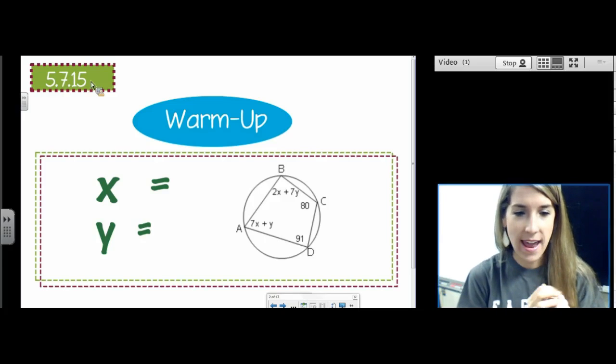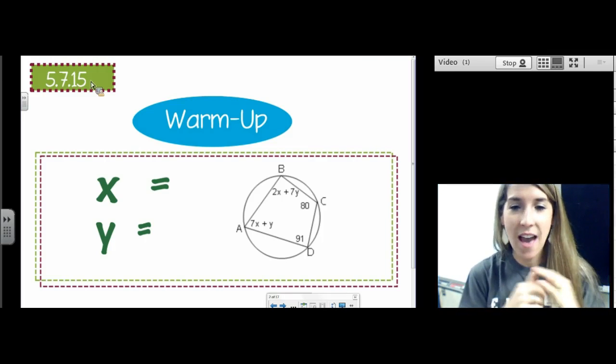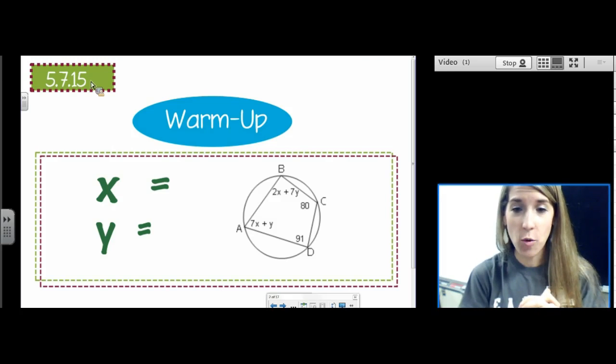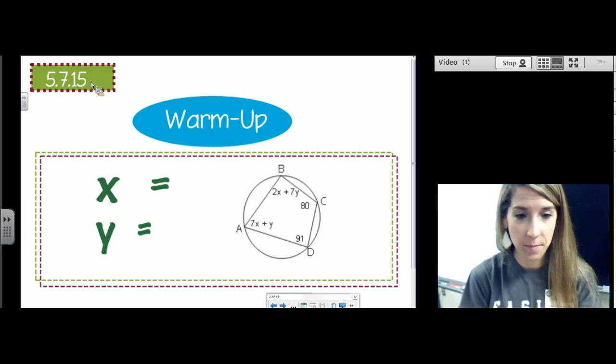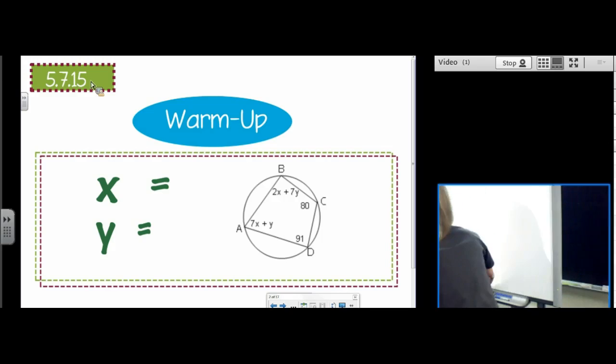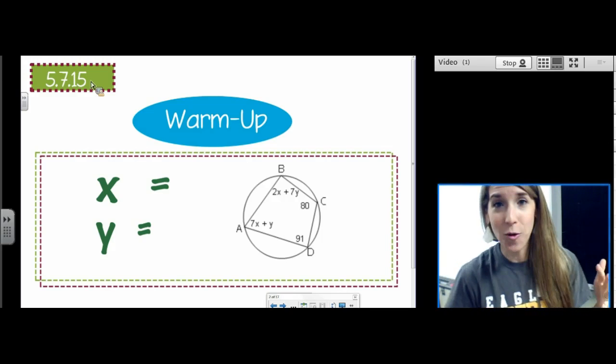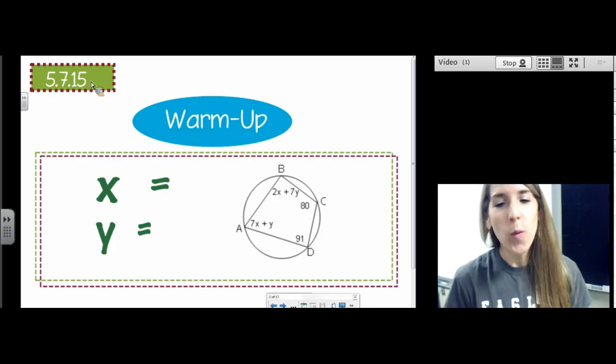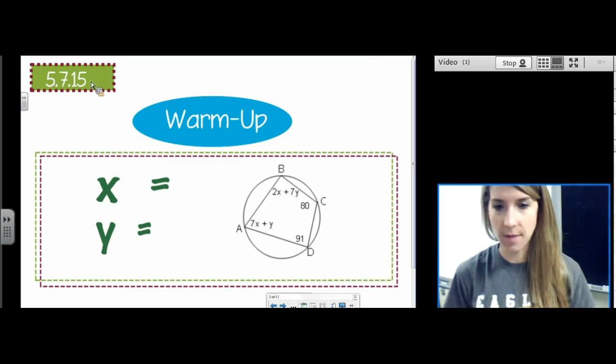So solve for x and y. In this warm-up, competing with the announcements, we have a quadrilateral inscribed in a circle. And we learned when a quadrilateral was inscribed in a circle, we learned something about the opposite angles. So look at your notes for that. The key to this problem is don't accidentally get caught thinking about parallelograms where opposite angles were congruent. We don't want to set the opposite angles equal, we want to add them to equal 180.